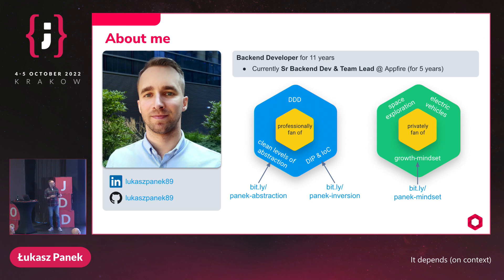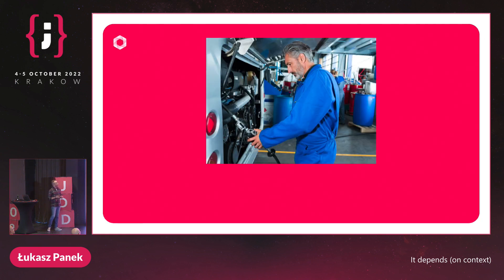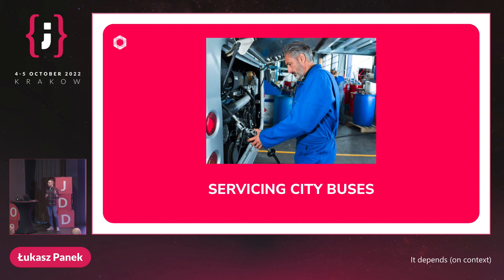To explain context, I've prepared some real-world examples. The first one is the longest and hopefully will explain most aspects of context. This example is from the buses domain — specifically from servicing city buses. In this example, we will follow two different teams and see how different designs they produce depending on their knowledge — and lack of knowledge — regarding contexts.